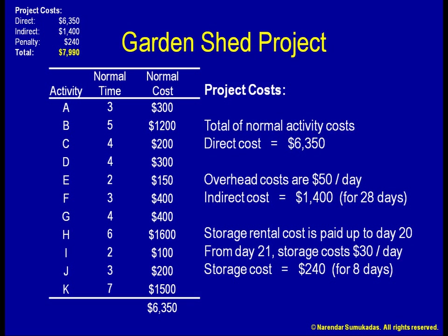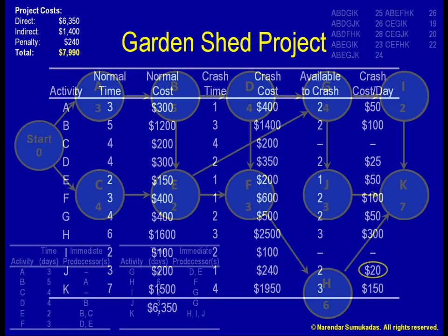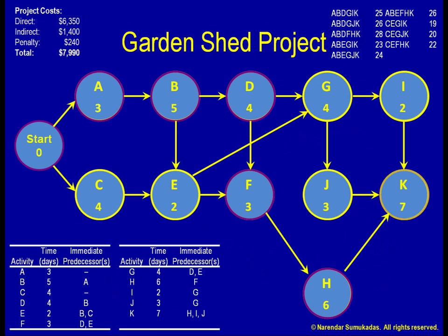To expedite my project, how about I select the cheapest activity to crash — that is J. Unfortunately, J is not on my critical path, so crashing it will only add to the slack but will not crash the project. I only want to crash critical path activities, that is A, B, D, F, H, or K.